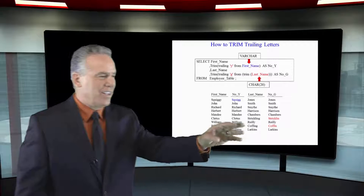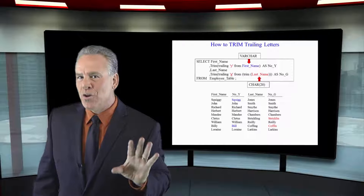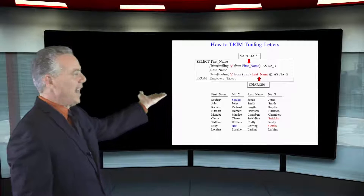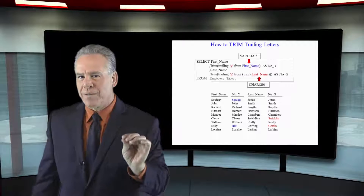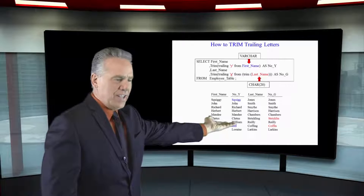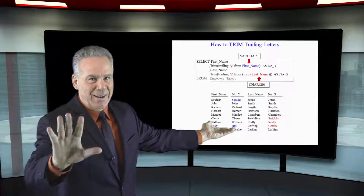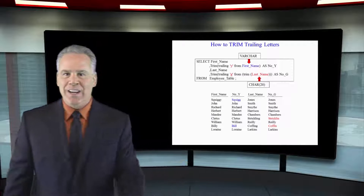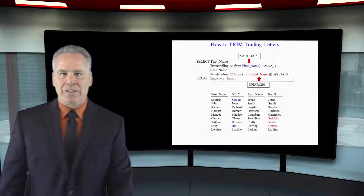Now take a look at this. We're going to select the first name and trim the trailing Y from the first name — notice it's lowercase. This is going to be more complicated because we're going to select the last name and trim the trailing small G from last name. But before we do that, we have to trim the spaces from the beginning and end of last name, and then do another trim of the trailing G. That's why the report has come out doing exactly what we expected.